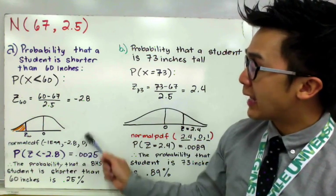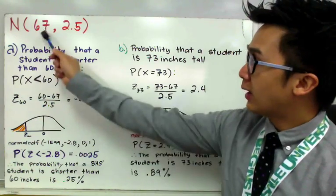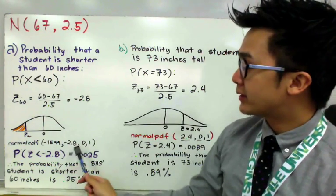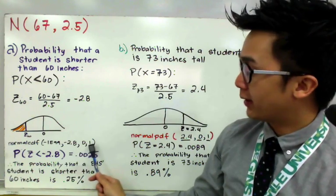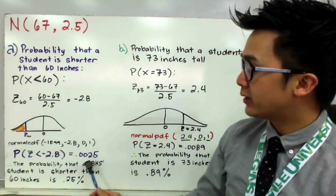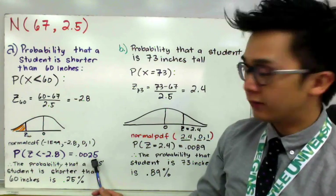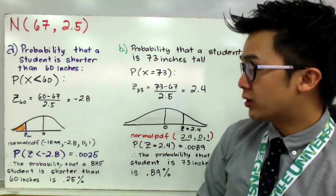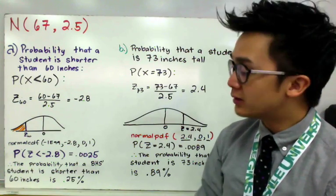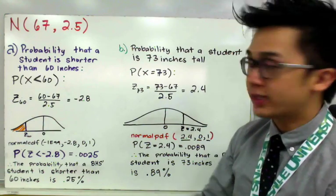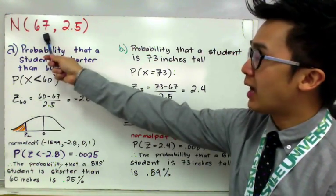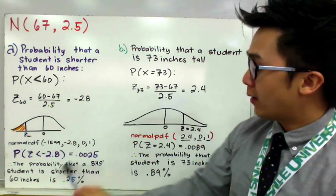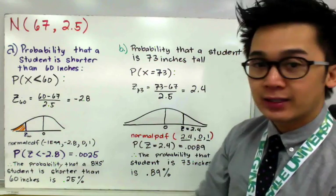Remember, every time we standardize our score, the mean and standard deviation used are no longer the original values from the problem — we use the standard values of mean = 0 and standard deviation = 1. Plugging these into the calculator gives us 0.0025. Therefore, the probability that a Barstow High School student is shorter than 60 inches is 0.25%, which is very small — less than 1% — because the mean height is 67 inches with a standard deviation of 2.5, so very few students will be shorter than 60 inches.